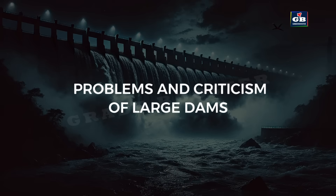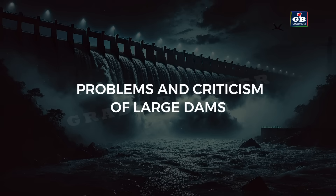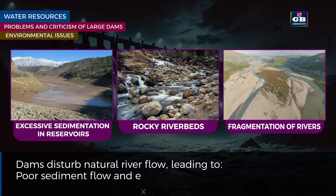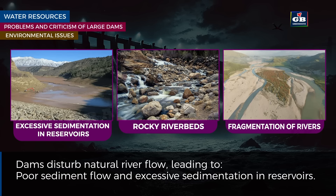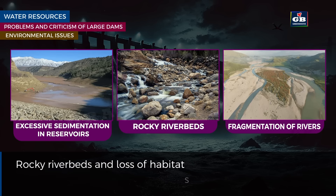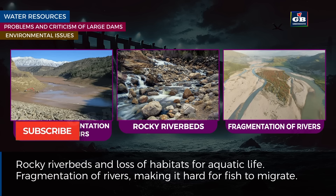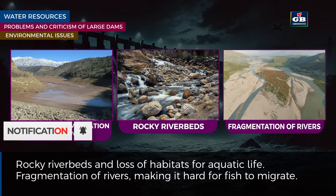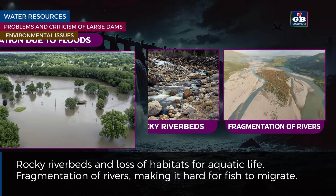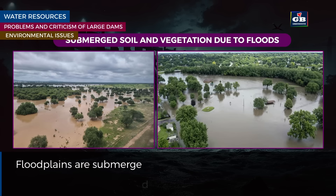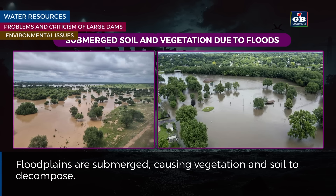Problems and criticism of large dams. Environmental issues: dams disturb natural river flow, leading to poor sediment flow and excessive sedimentation in reservoirs, rocky river beds and loss of habitats for aquatic life, fragmentation of rivers making it hard for fish to migrate, and submergence of flood plains causing vegetation and soil to decompose.